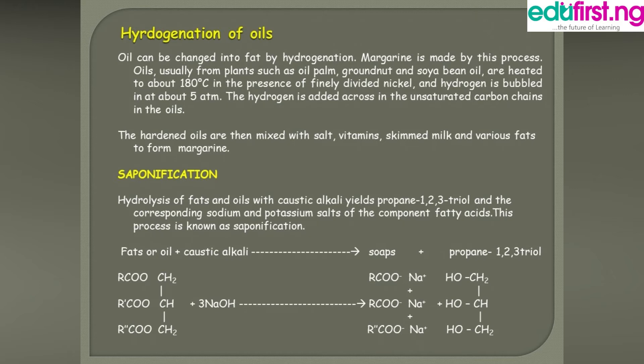Oil can be changed into fat by hydrogenation — this is the process of making margarine. Oils from plants such as oil palm, groundnut, and soya bean are heated to about 180°C in the presence of finely divided nickel as a catalyst. Hydrogen is bubbled in at about 5 atmospheres pressure and is added across the unsaturated carbon chains in the oils. The resulting fat, mixed with salt and vitamins, forms margarine.